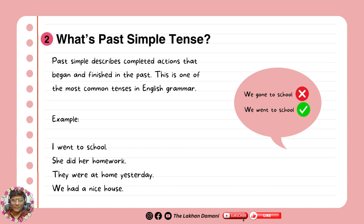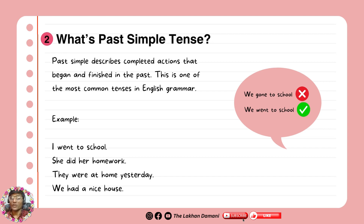Here we have examples: I went to school. She did her homework. They were at home yesterday. We had a nice house. These are very common sentences. Sometimes people make mistakes because they don't know tenses. You can't say we gone to school — you say we went to school, because we use the second form with past simple tense.